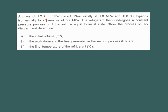You have a mass of 1.2 kg of refrigerant initially at 1.6 megapascal and 150 degrees C. It expands isothermally to a pressure of 0.7 megapascal. The refrigerant then undergoes a constant pressure process until the volume equals your initial state. You need to show the process on the T-V diagram and then determine the initial volume, the work done, the heat generated, and the final temperature of the refrigerant. For this problem we are going to apply your energy balance equations.